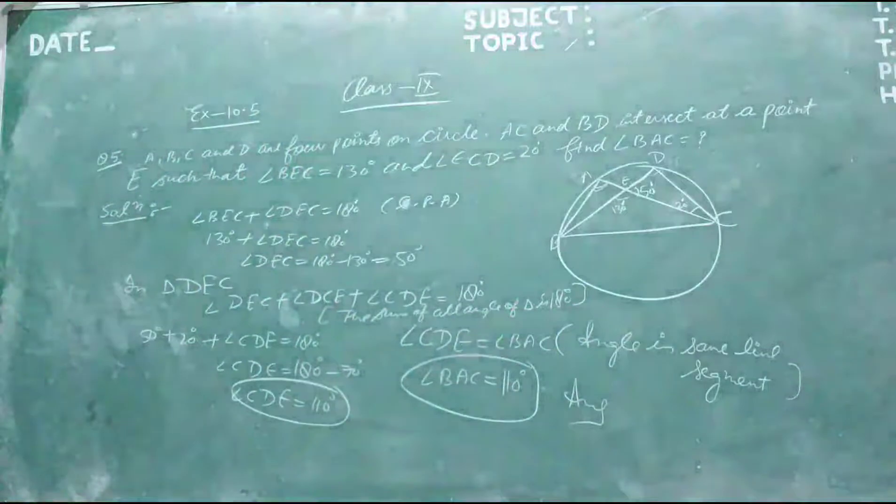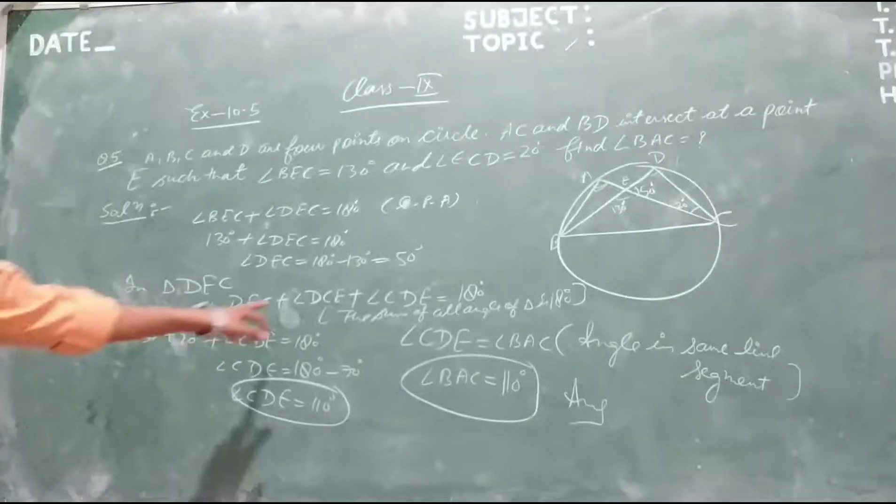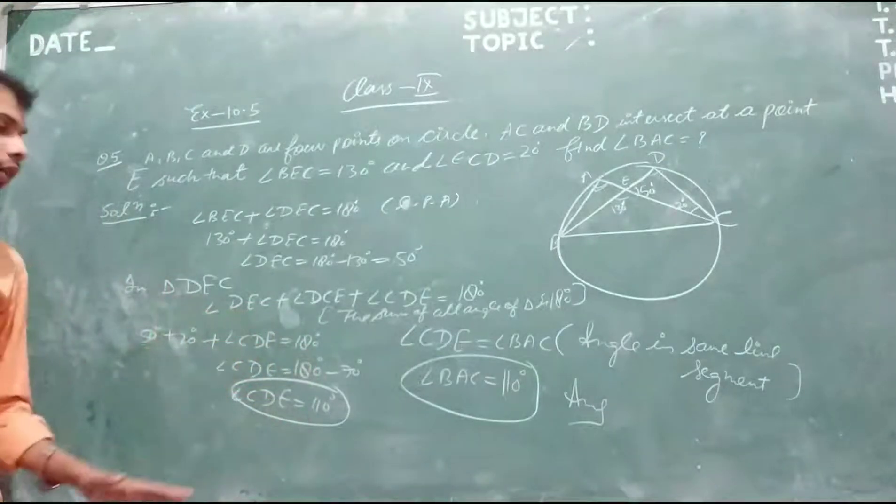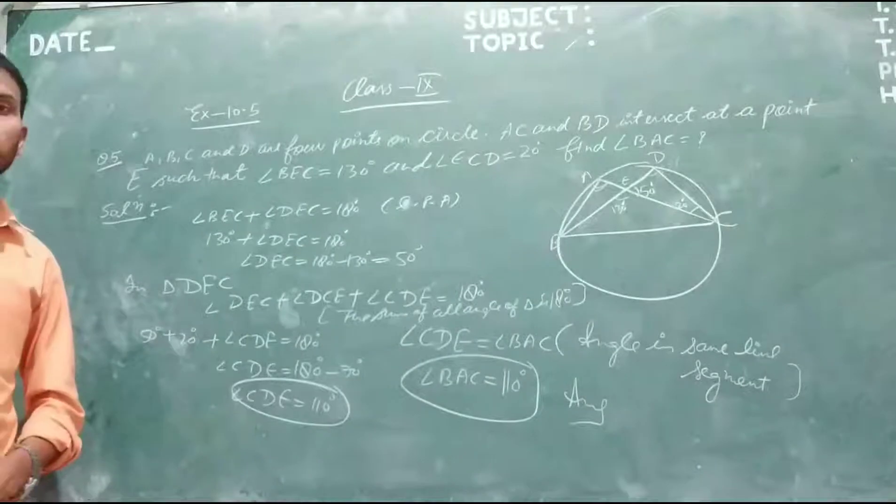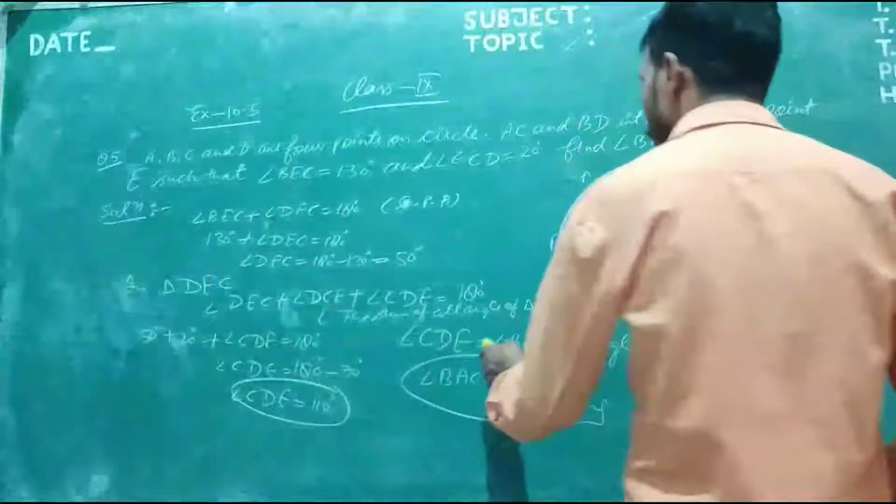By the sum of angles, 180 degrees. DEC is 50 and this is 20 degrees, so this is 110 degrees.